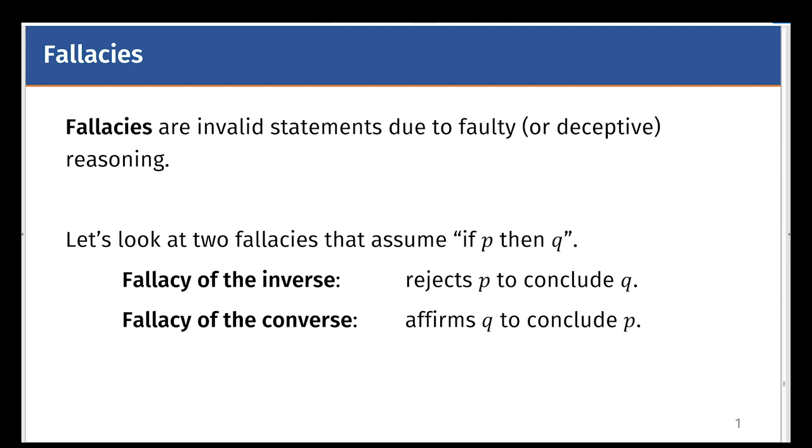But what if this argument is invalid? This is what you call a fallacy. Let's take a look at two fallacies that assume if P then Q. The first is the fallacy of the inverse.